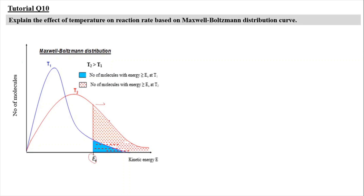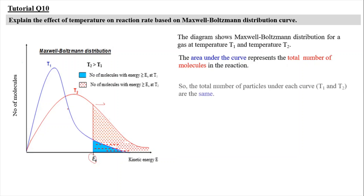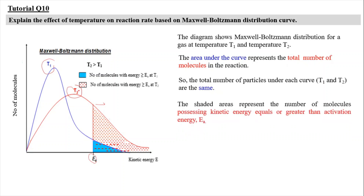To understand this more, let's put that into words. The diagram shows a Maxwell-Boltzmann distribution curve for T1 and T2. The area under the graph represents the total number of molecules in the reaction, so the total number of particles for T1 and T2 is the same. The shaded area represents the number of molecules possessing kinetic energy equal to or greater than the activation energy.